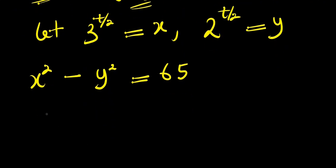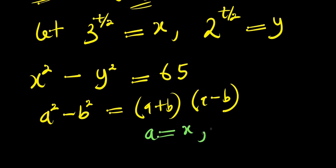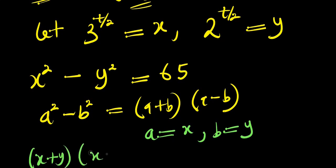We apply the difference of two squares identity: a squared minus b squared equals (a + b)(a − b). Here a equals x and b equals y, so we get (x + y)(x − y) equals 65.